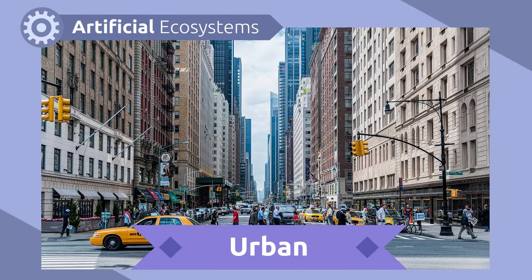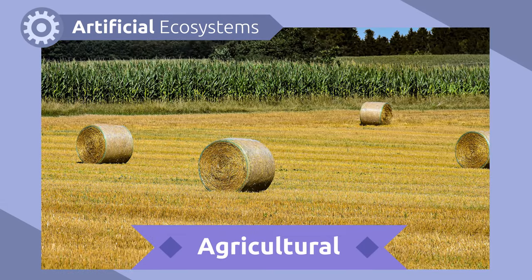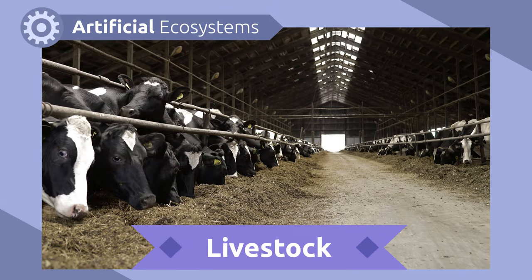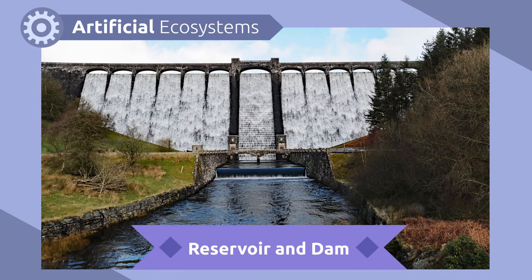Artificial ecosystems are those areas created by humans that cannot be found in nature, like urban ecosystems, agricultural ecosystems, livestock ecosystems, and reservoir and dam ecosystems.